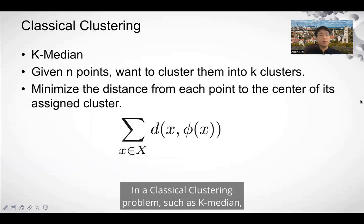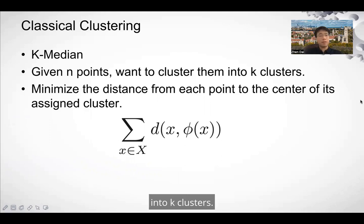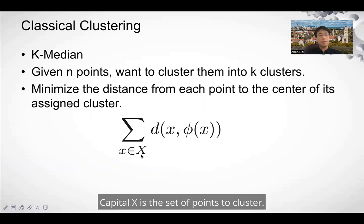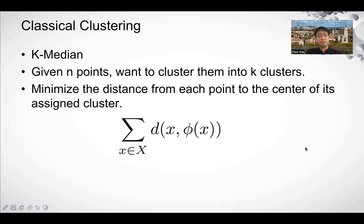In a classical clustering problem such as k-median, we are given n points and we want to cluster them into k clusters so as to minimize the distance from each point to the center of its assigned cluster. Here, d is the distance metric, X is the set of points to cluster, and for each x in X, phi is the center of the assigned cluster of x.